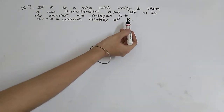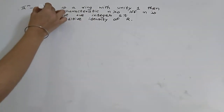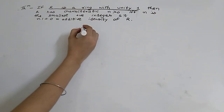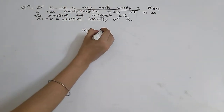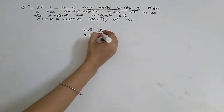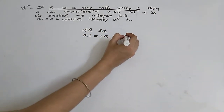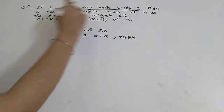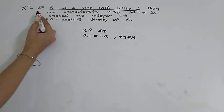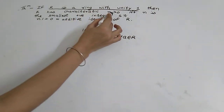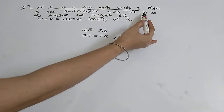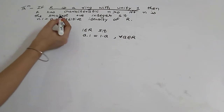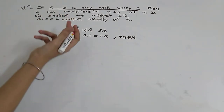The statement gives us R as a ring with unity 1. Ring with unity means 1 belongs to R such that a into 1 equals 1 into a for all a belonging to R — that is the definition of ring with unity. We have to prove that R has characteristic n greater than 0 if and only if n is the smallest positive integer such that n into 1 equals 0, the additive identity.